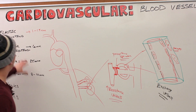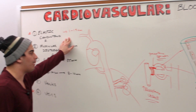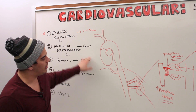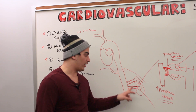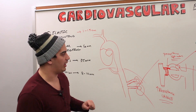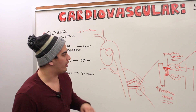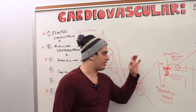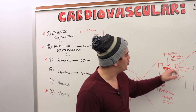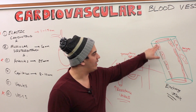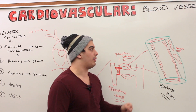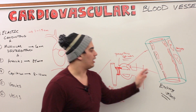To recap the arterial side: elastic conducting arteries are about 1 to 1.5 centimeters, are extremely high pressure, and must be elastic and able to recoil. Muscular distributing arteries are about 6 millimeters in diameter, deliver blood specifically to organs like the renal, suprarenal, or inferior phrenic arteries, and have an extremely thick tunica media. Arterioles are about 35 micrometers with pre-capillary sphincters and are the highest resistance vessels. Capillaries are exchange vessels with a tunica interna, subendothelial layer, pericytes, and basal lamina.